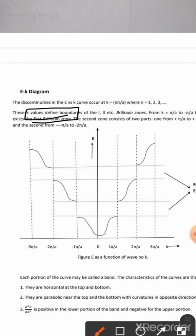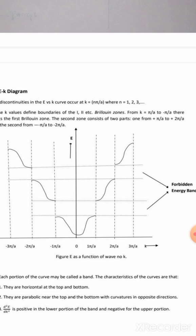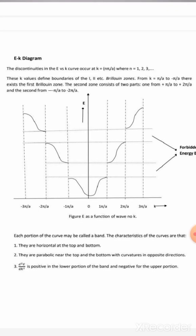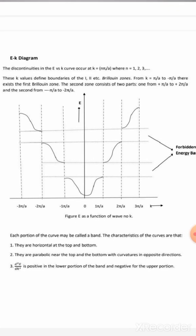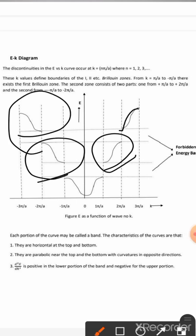The second zone consists of two parts: one from -π/a to -2π/a, and the second from +π/a to +2π/a. As we know there is discontinuity, these regions show the forbidden energy. Each portion of the curve is known as a band.